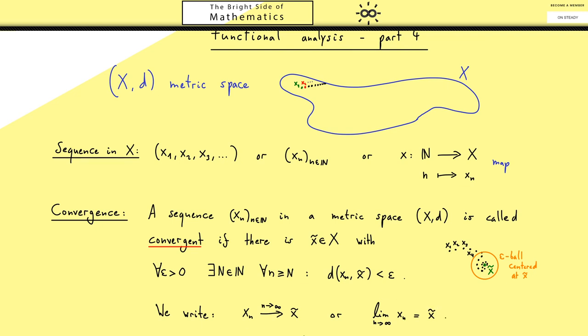If you see such notations please remind yourself that these are always given with respect to a metric d. And of course we can use such notations because in a metric space there can only be at most one x tilde that fulfills all of these things here. You can easily show that using the triangle inequality.